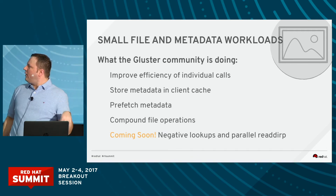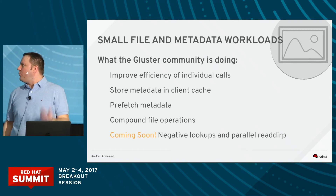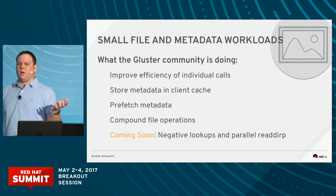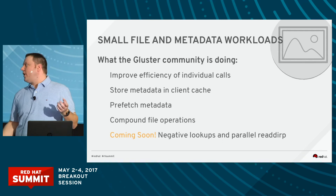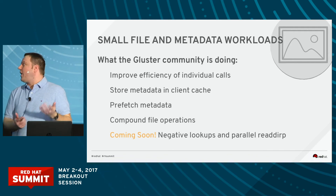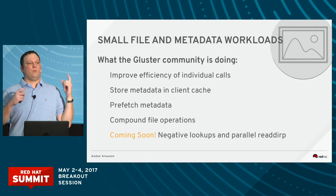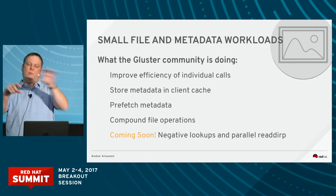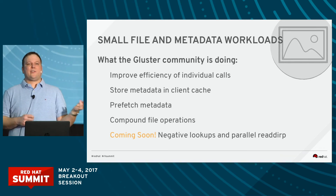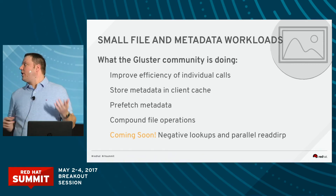With small file, there are some challenges, and what we are trying to do with the community to get over those challenges is improve the efficiency of individual calls. A good example is Lookup Optimize. Before Lookup Optimize came out, you would issue more than one lookup per brick whenever you were doing a file create. Lookup Optimize takes you down to the minimum of lookups — one lookup per brick to make sure the file isn't anywhere. The reason we don't just look at where the file hashes to is because if a brick is down, you might have a link file.